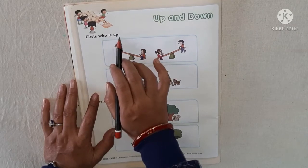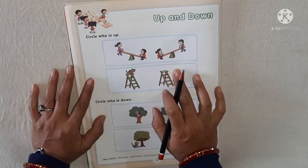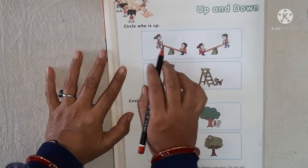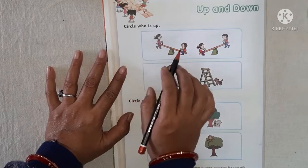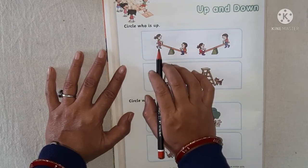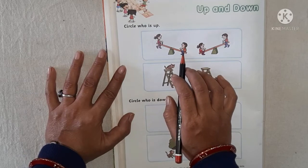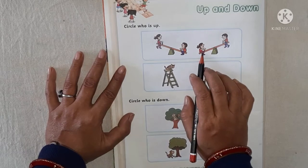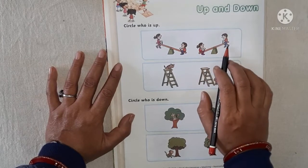Circle — who is up? What is this? This is a seesaw. This girl is sitting up, and this boy is sitting down. And here this girl is sitting down, and this boy is sitting up.